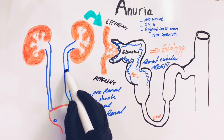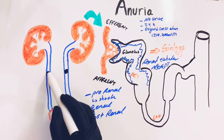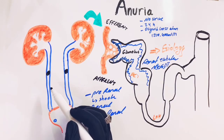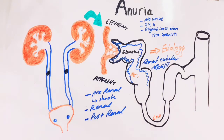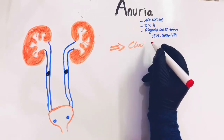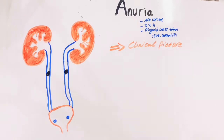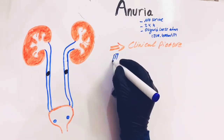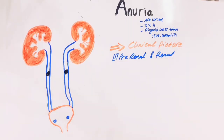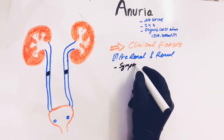Postrenal causes may include bilateral stone impaction in the ureters or the kidneys, or unilateral obstruction where the other kidney is congenitally absent, or reflex suppression. For the prerenal and renal causes, the clinical picture is the symptoms of the underlying cause, such as shock or tubular necrosis.